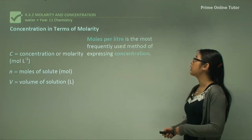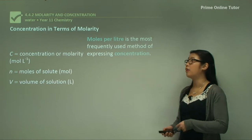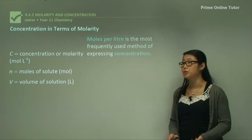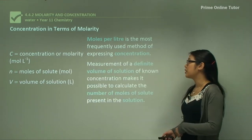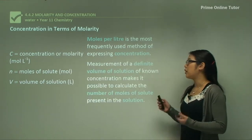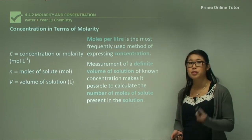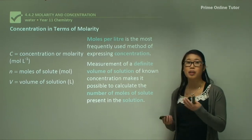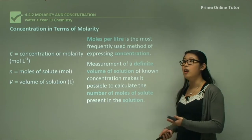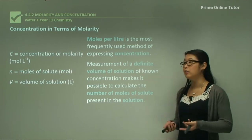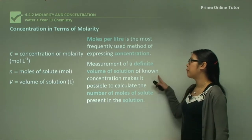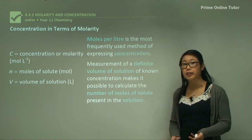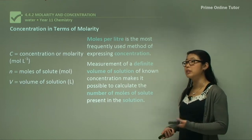Moles per litre is the most frequently used method of expressing concentrations of a solution. We use it as a measurement of a definite volume of solution — whether that's half a litre, a litre, or more — and then we can establish the known concentration and calculate the number of moles.